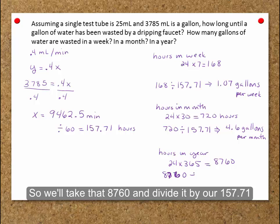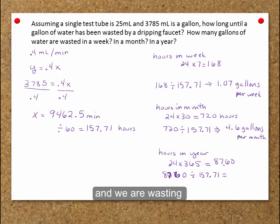So we'll take that 8,760 and divide it by our 157.71, and we are wasting 55.5 gallons per year.